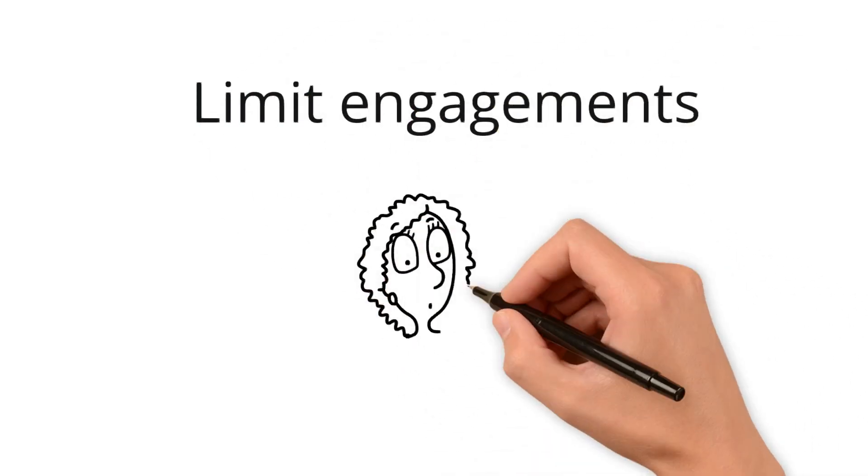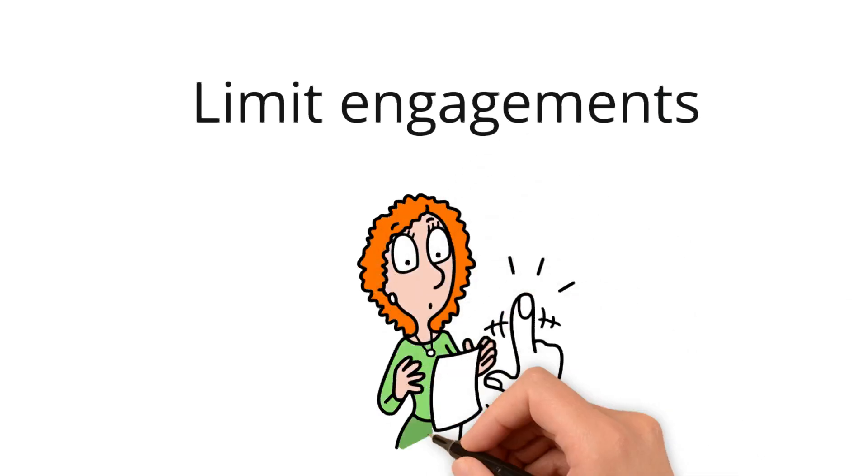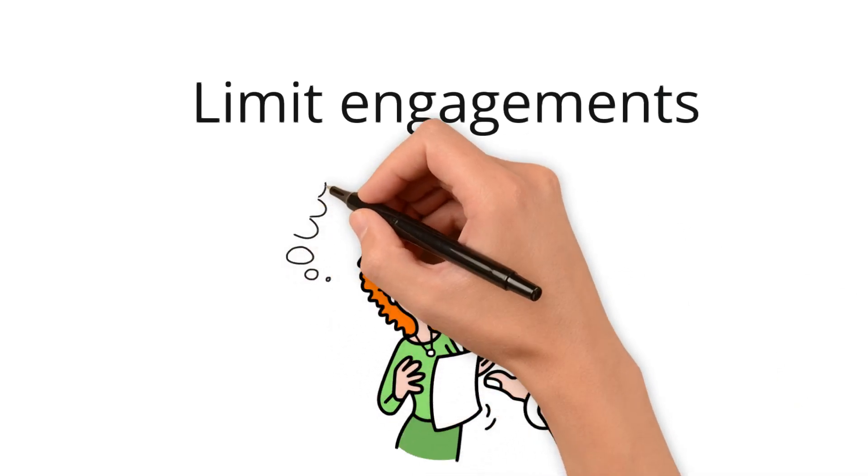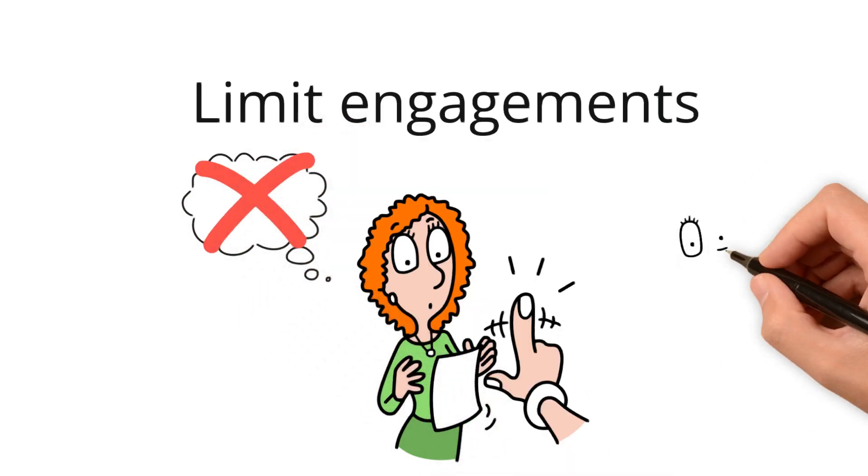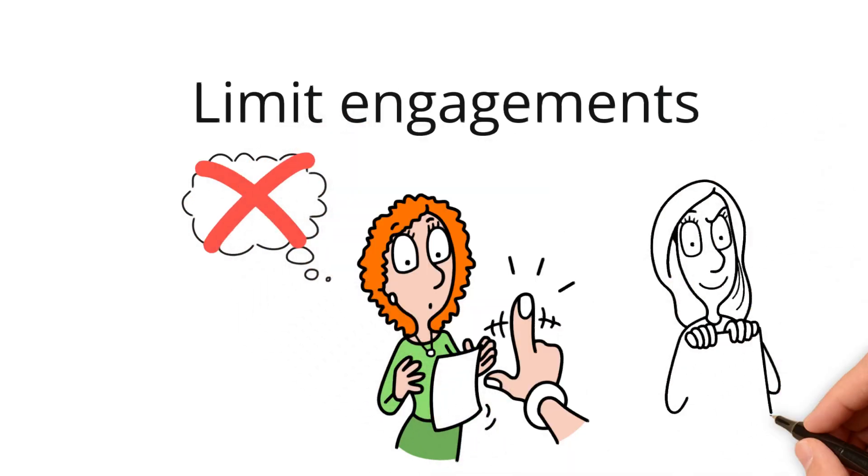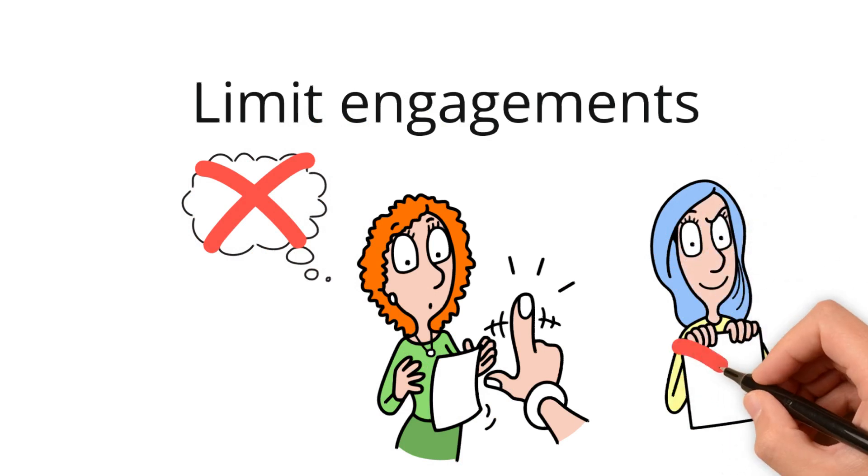You also try to limit the kind of engagements that you have with a narcissist and with a borderline. And if they are accusing you of things or if it's all their imagination, you simply don't entertain those conversations with them. So you try to avoid topics or arguments that are going to trigger a debate or an argument or a fight.